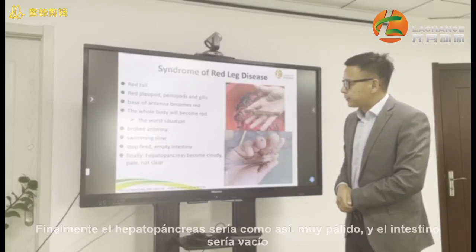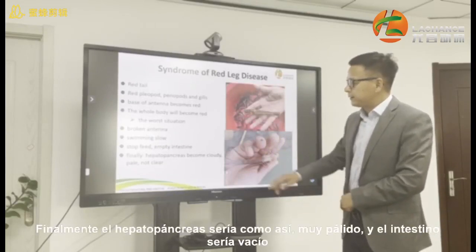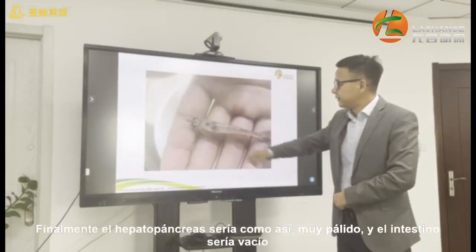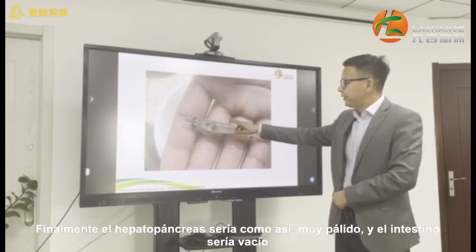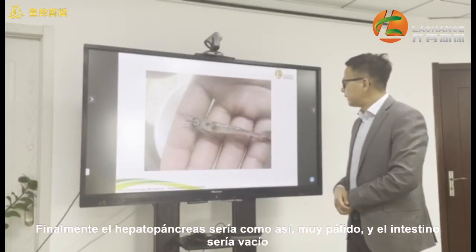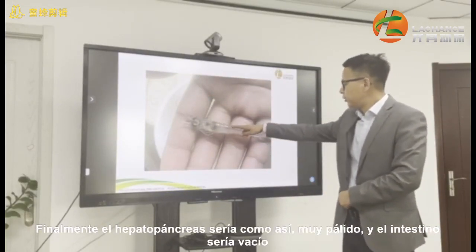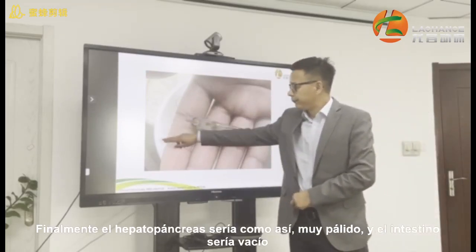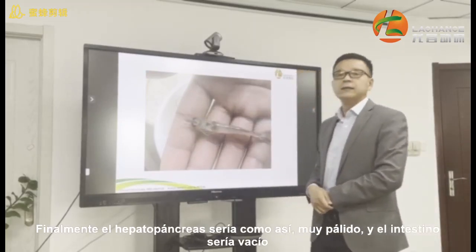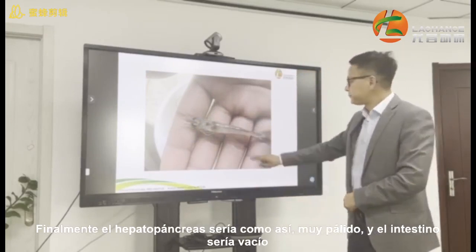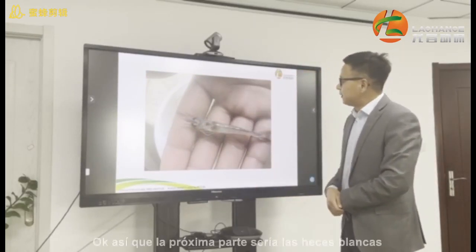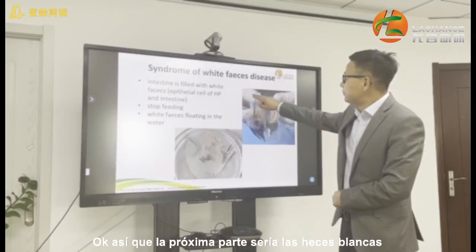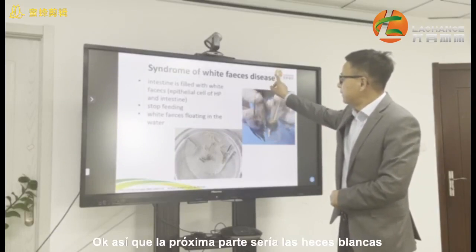Finally, the hepatopancreas will look like this — very cloudy, become pale — and also the whole intestine is empty. Under the antenna, we can see the antenna is broken. That is the red leg disease.